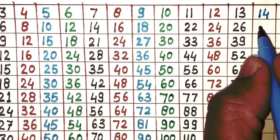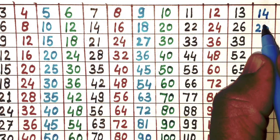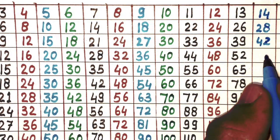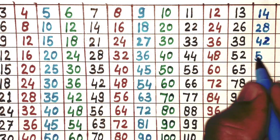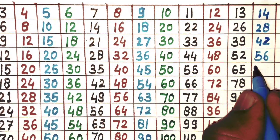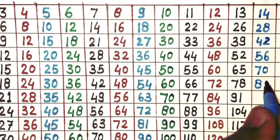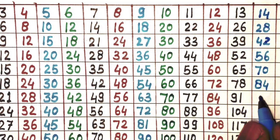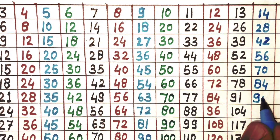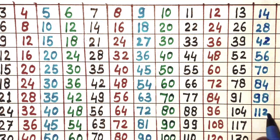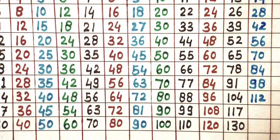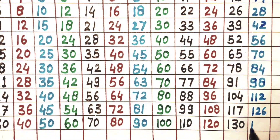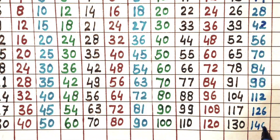Next 14. 14×1 is 14, 14×2 is 28, 14×3 is 42, 14×4 is 56, 14×5 is 70, 14×6 is 84, 14×7 is 98, 14×8 is 112, 14×9 is 126, 14×10 is 140.